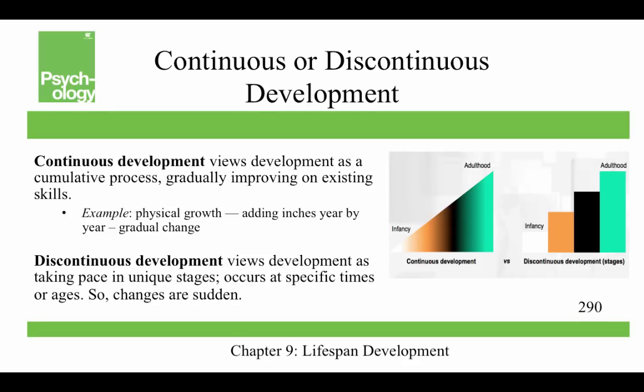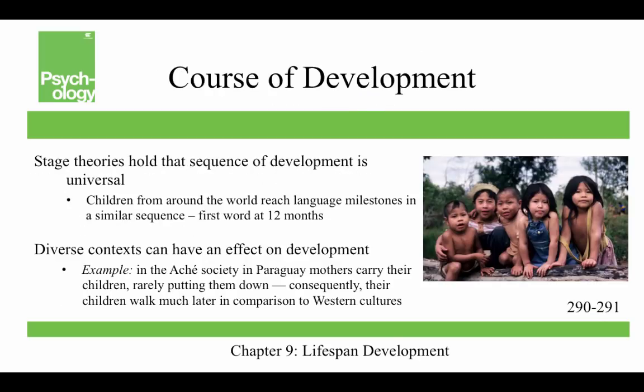Continuous development views development as a cumulative process, gradually improving on existing skills — for example, physical growth adds inches year by year. Discontinuous development views development as taking place in unique stages that occur at specific times or ages, where changes are sudden. We'll talk about theories that are continuous or discontinuous.